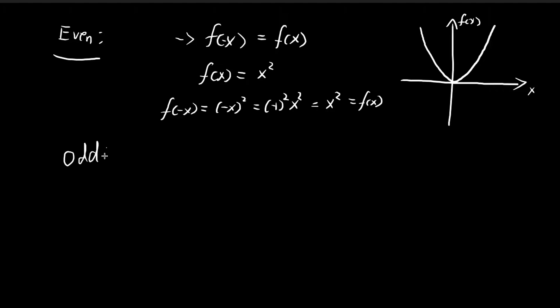As for an odd function, it satisfies a slightly different property. f(-x), if it is an odd function, should be equal to -f(x).